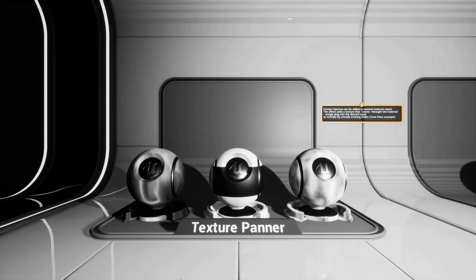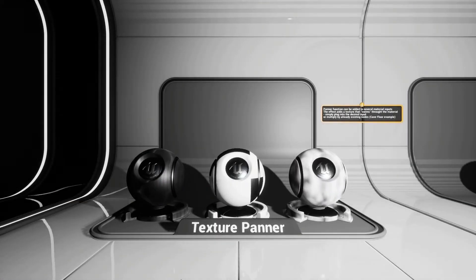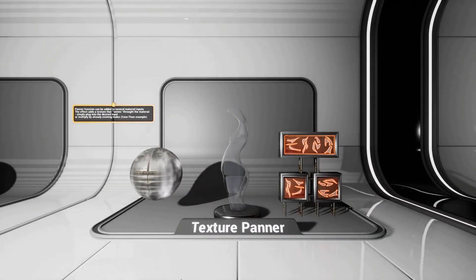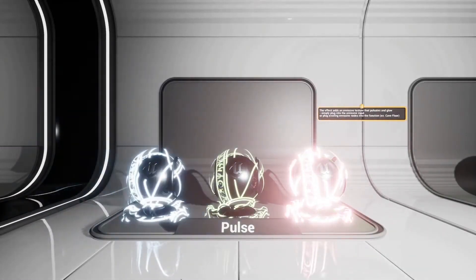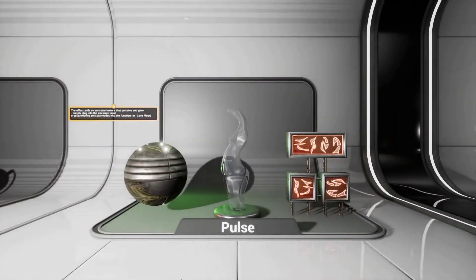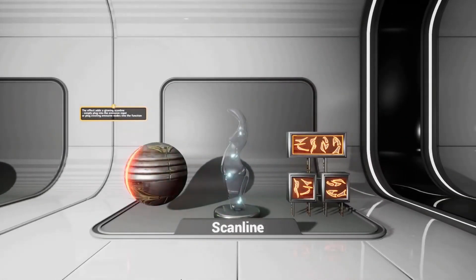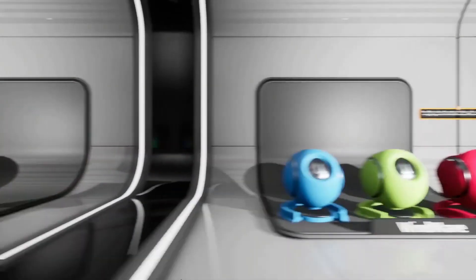First off, we've got the Material Function Collection, which is a set of basic material functions universal for any project. This package consists of materials with special functions to achieve various visual effects. Each material is customizable through multiple parameters to match your desired effect, with several possibilities displayed in the showcase room, with plenty of options to experiment with as well.